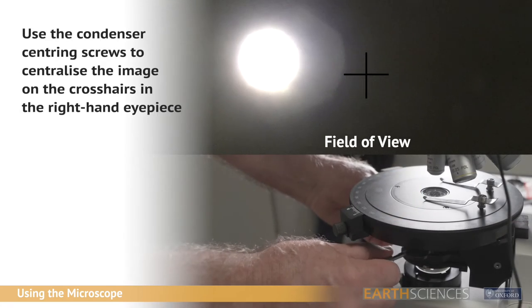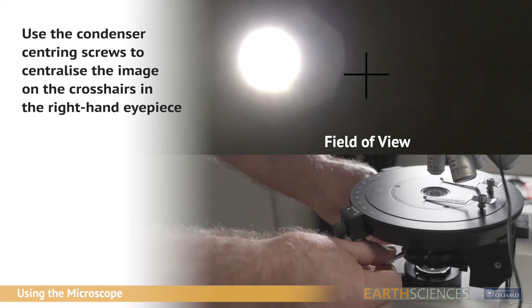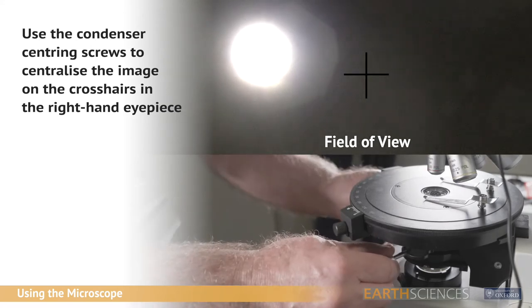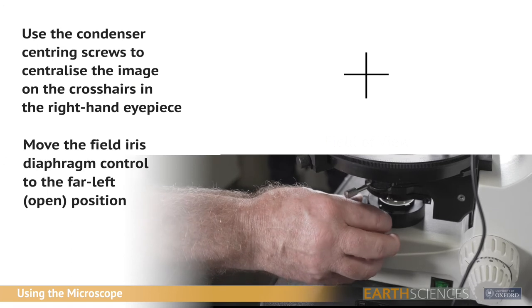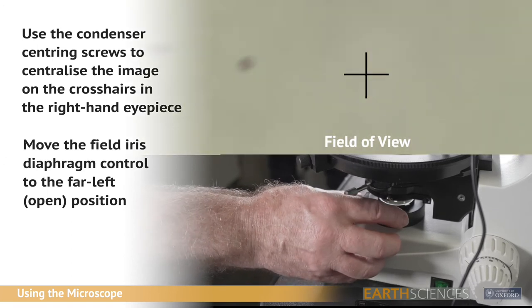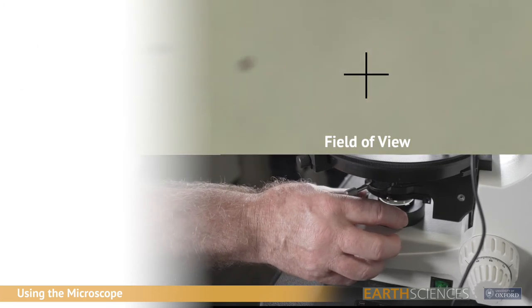Next, use the condenser centering screws to adjust the image until it's centered using the crosshairs in the right eyepiece. Move the field iris diaphragm control fully over to the left. The substage condenser is now properly set up for use.